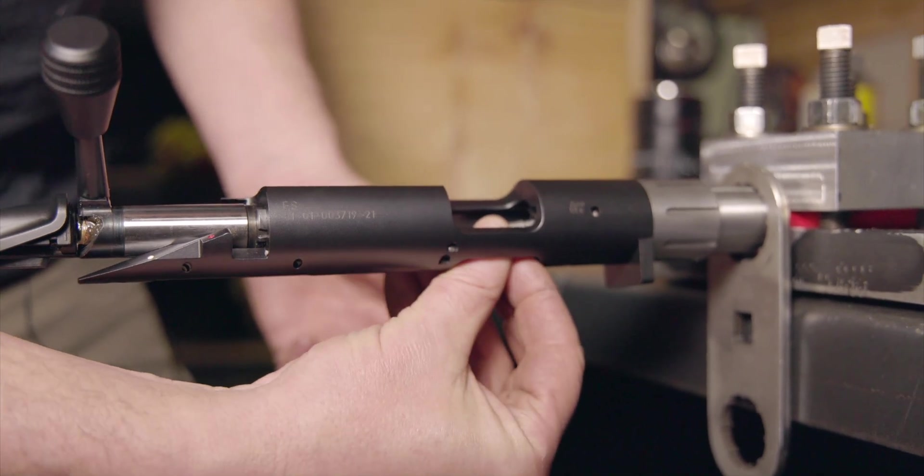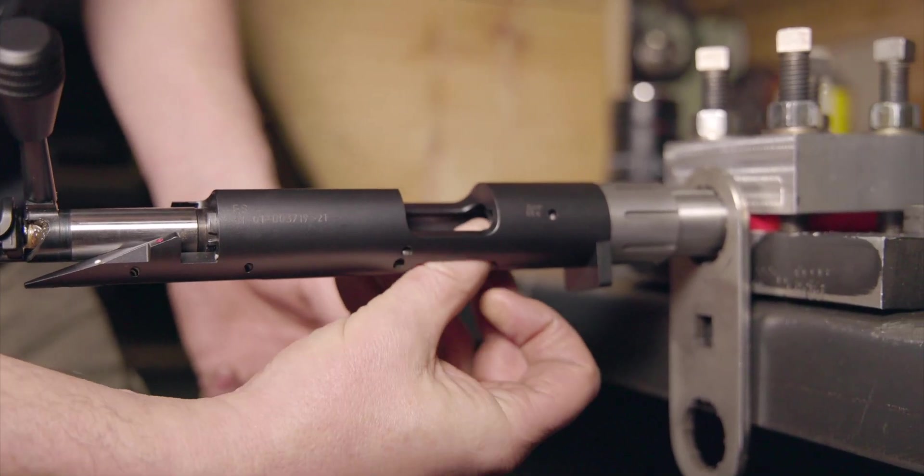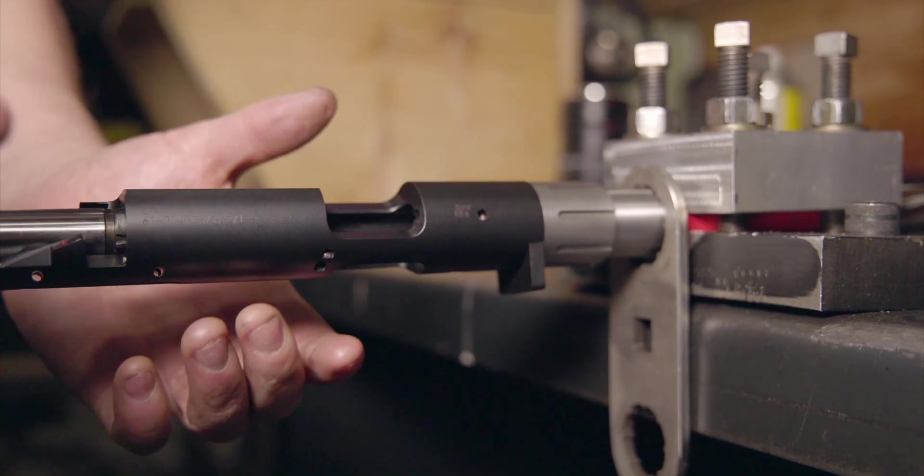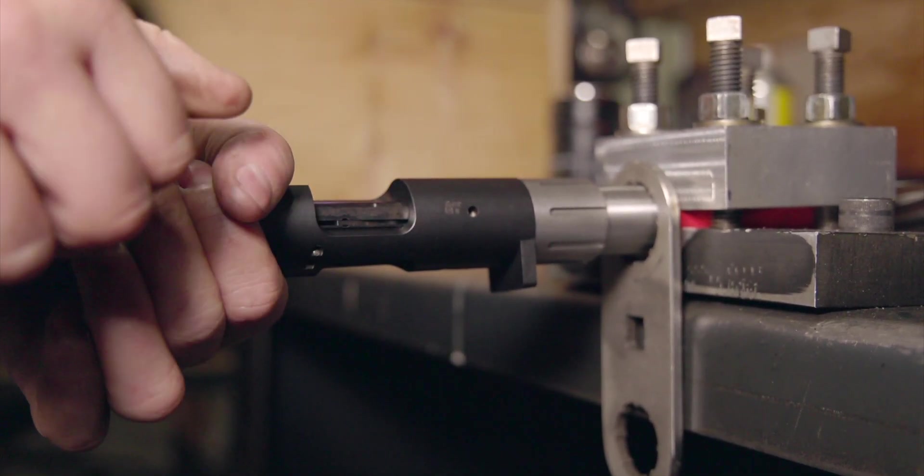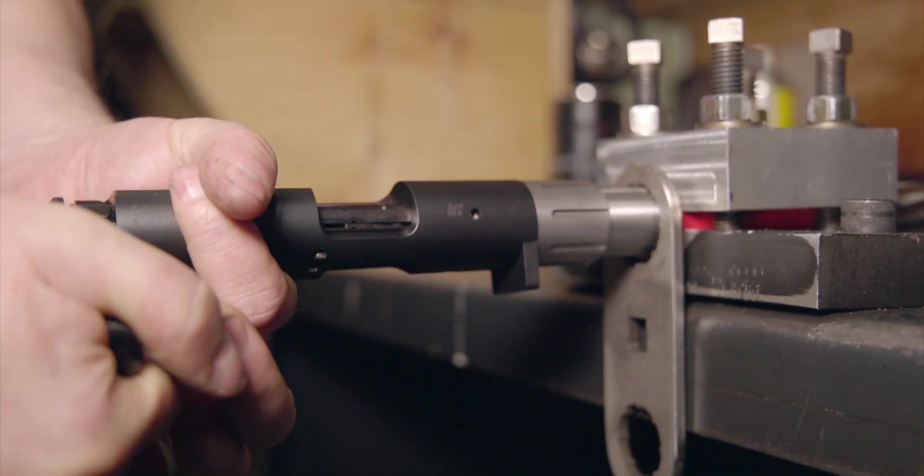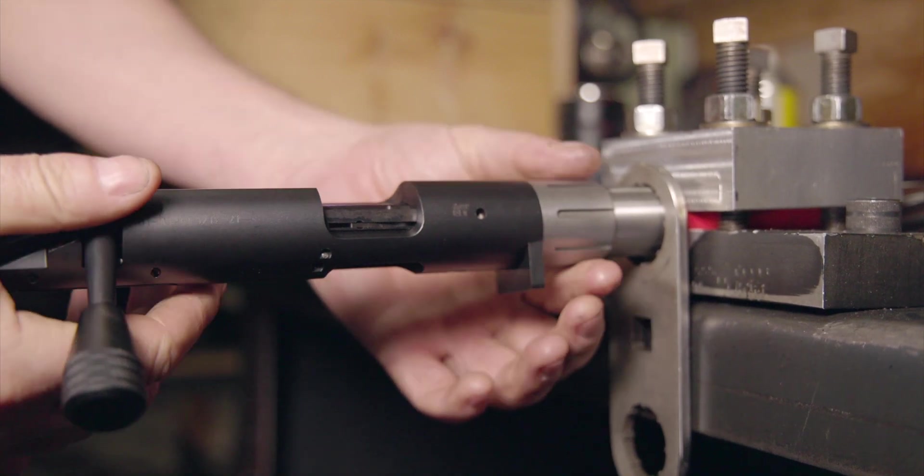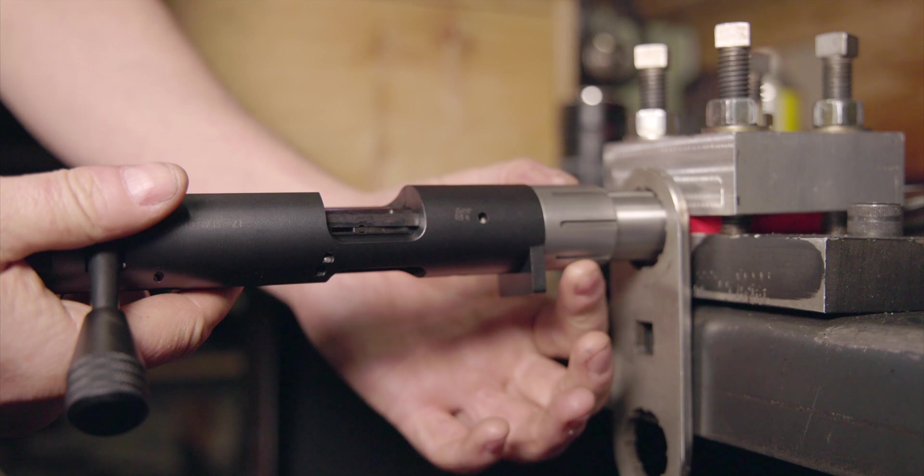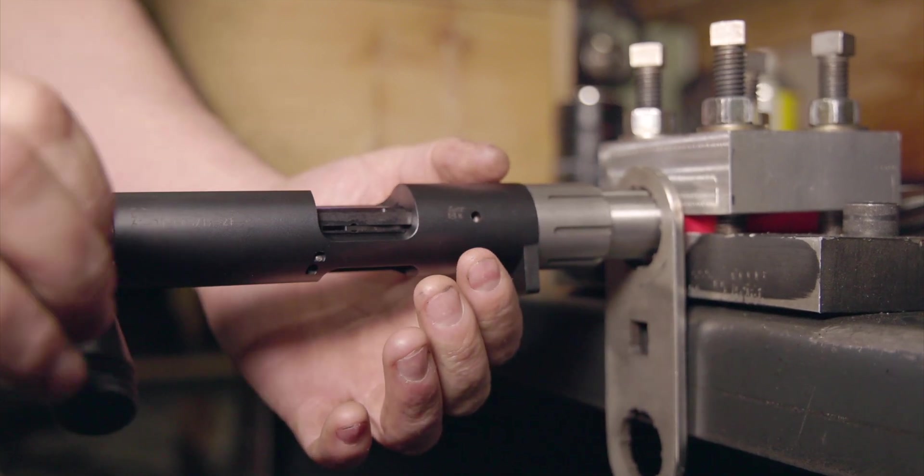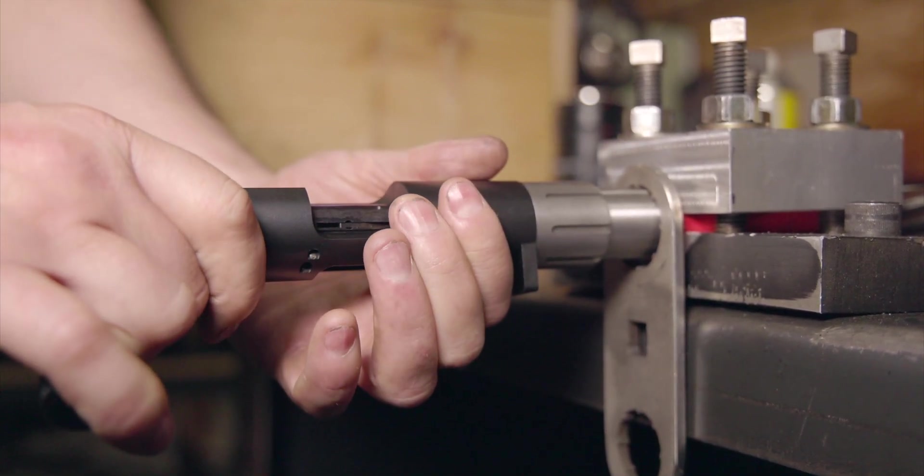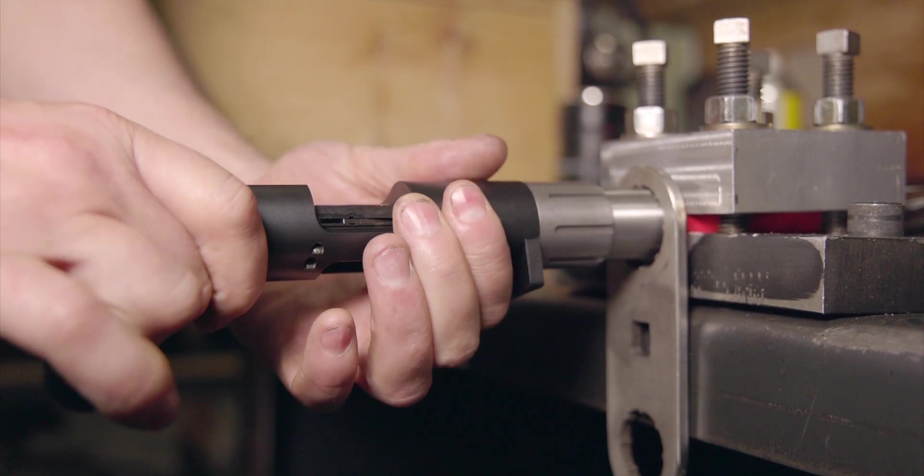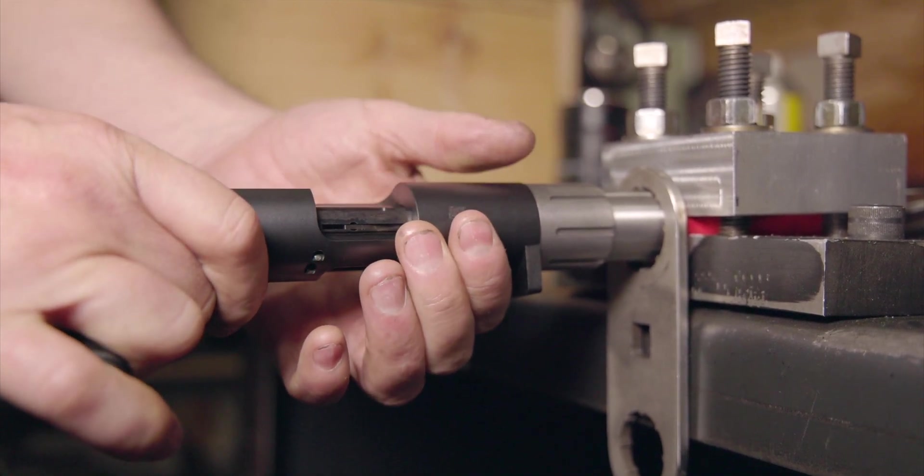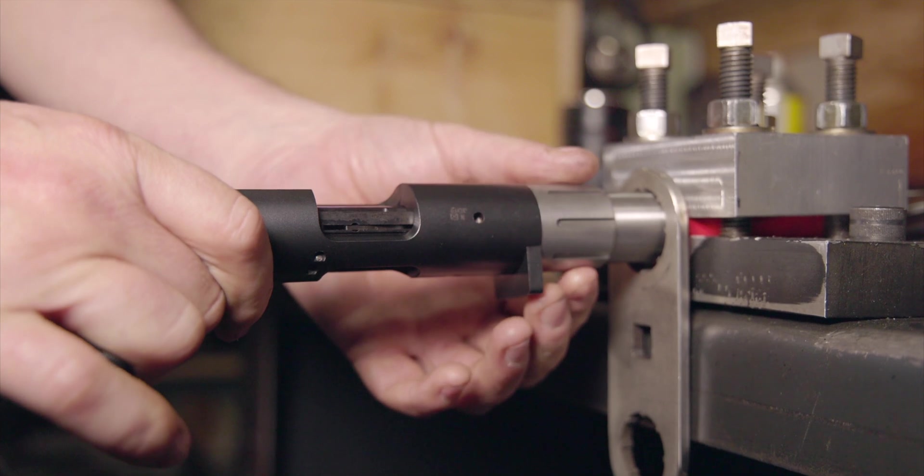I'm going to put the go gauge in and close the bolt. Once we have the bolt closed, we're going to loosen up the barrel nut just a hair so you get a little bit of room to play, and we're going to turn the action in the direction of tighter, which is to the right.